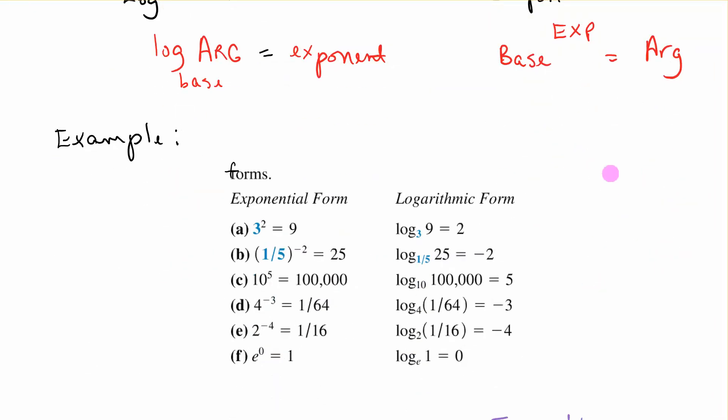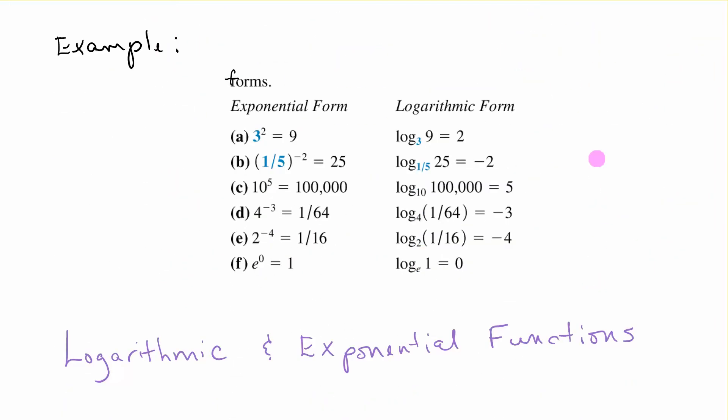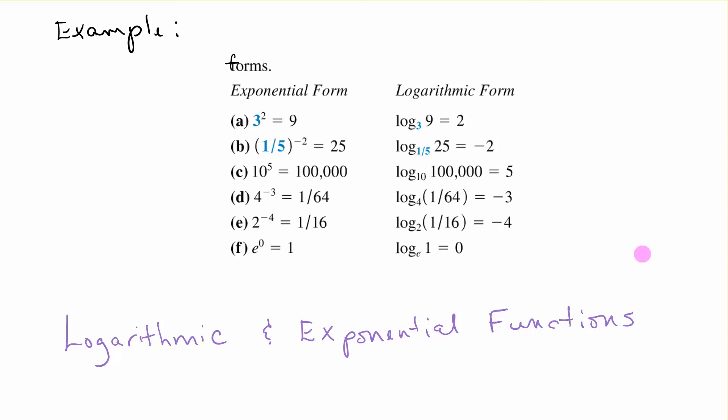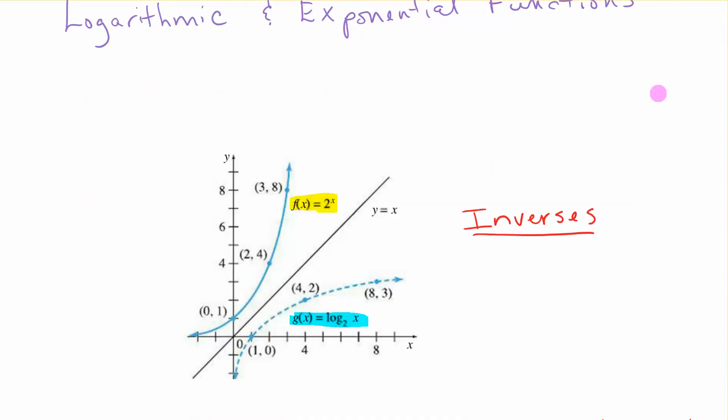Here's some examples of that. Exponential form would be 3 squared equals 9. The base is 3, exponent 2, argument is 9. Log base 3 of 9 equals 2. You see 4 to the negative third equals 1 over 64. Log base 4 of 1 over 64 equals negative 3. Exponents always over here.